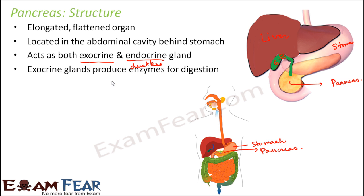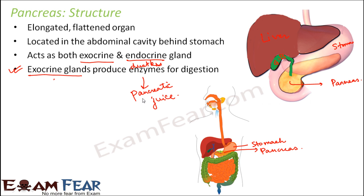The exocrine glands of the pancreas produce enzymes that form the pancreatic juice. Just as gastric juice comes from the stomach and bile juice comes from the liver, pancreatic juice comes from the pancreas. This pancreatic juice contains many enzymes which help in the digestion of complex biomolecules like proteins, carbohydrates, and lipids.